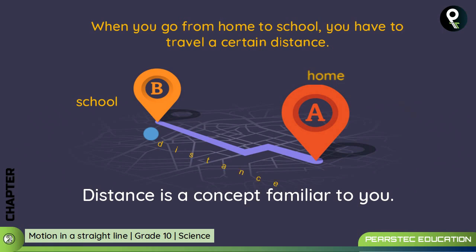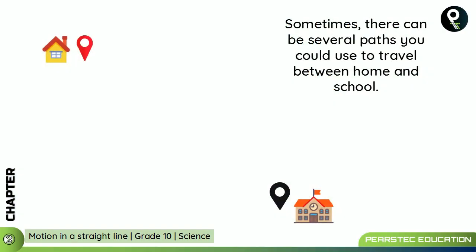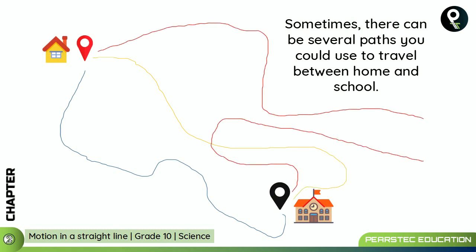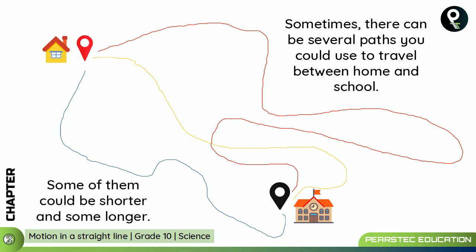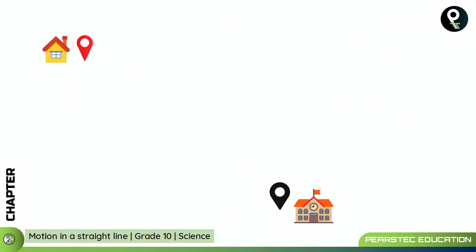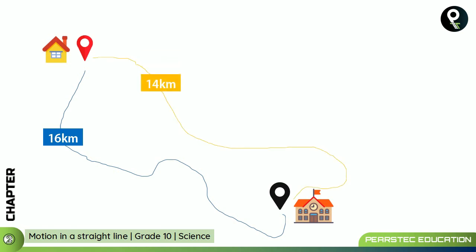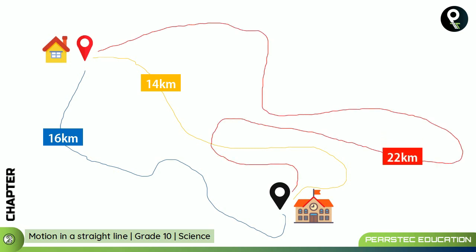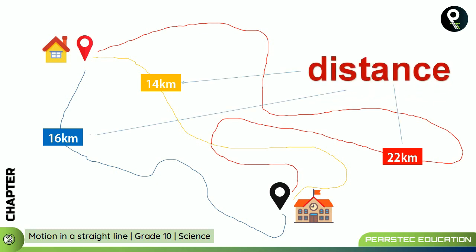Suppose A is your home and B is your school. Sometimes there can be several paths you could use to travel between them. As shown here, the blue line, yellow line, and red line represent different distances — some shorter, some longer. For example, one route is 16 kilometers, the orange line is around 14 kilometers, and the red line is the farthest at 22 kilometers. These are all known as distances.